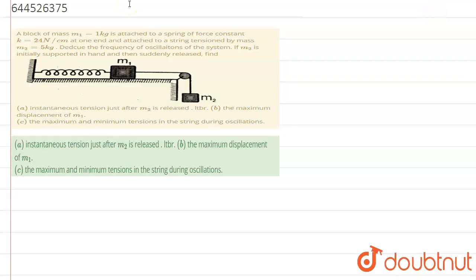We have the question that a block of mass M1 is 1 kg is attached to the spring of force constant K equals 24 N per centimeter at one end and attached to the spring tensions of mass M2 is 12 kg. Find the frequency of oscillation of the system if M2 is initially supported in the hand and then suddenly released. Find the instantaneous tension just after M2 is released, the maximum displacement of M1, and the maximum and minimum tension in the spring during oscillation.